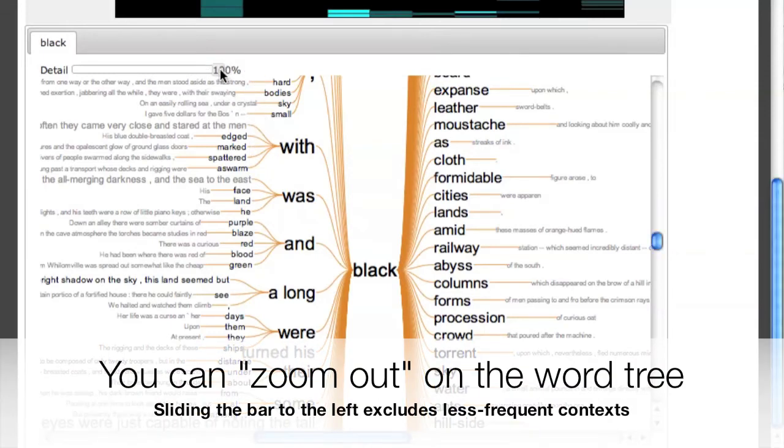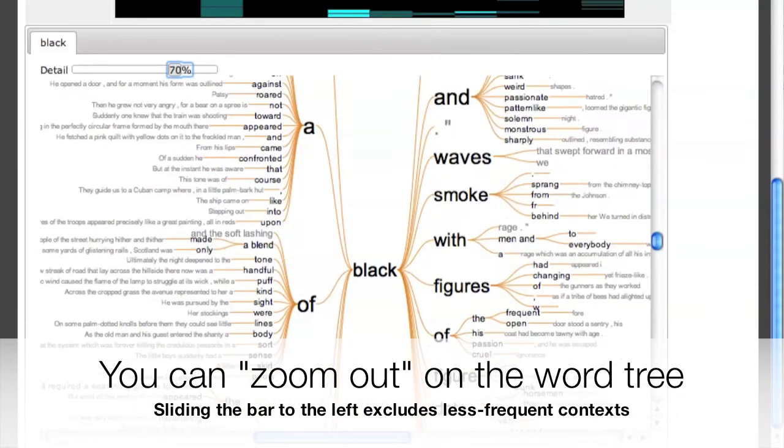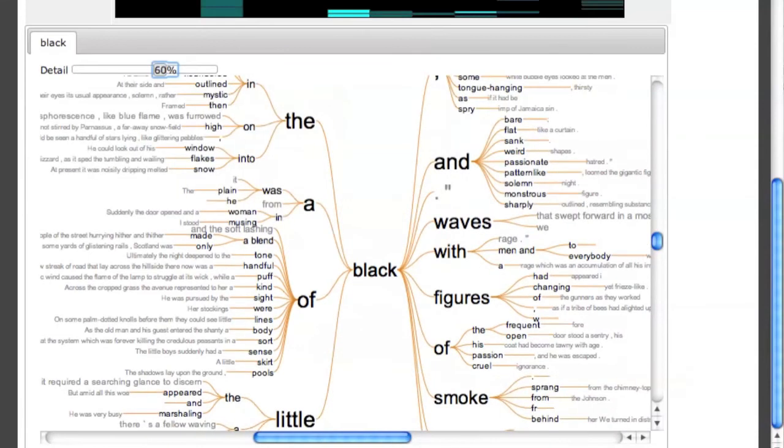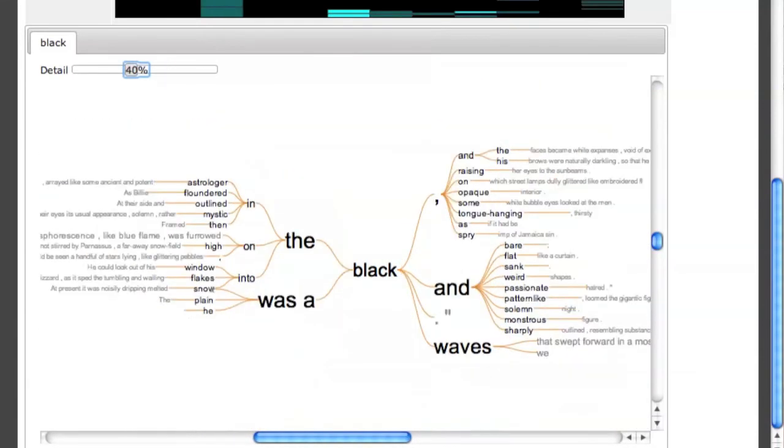Sometimes word trees can get unwieldy. And so you can zoom out on them. Zooming out essentially shows you only the most frequent occurrences, the most frequent contexts, and leaves out the less frequent contexts.